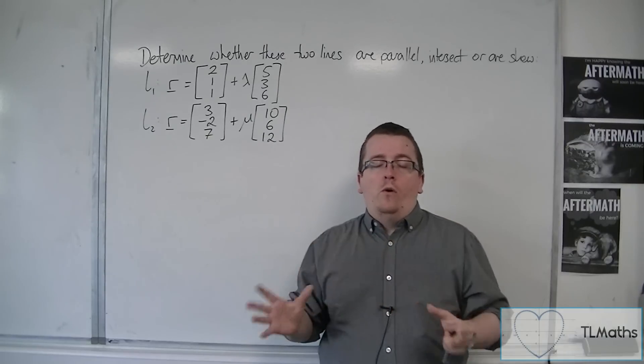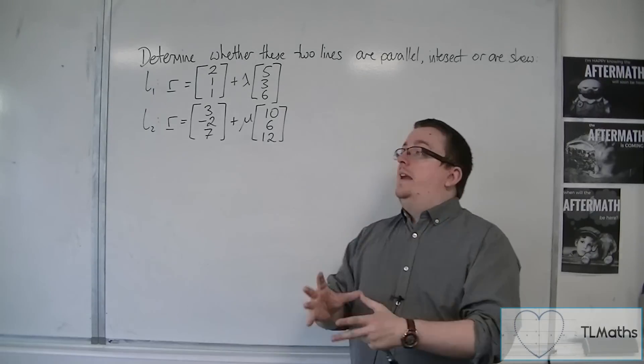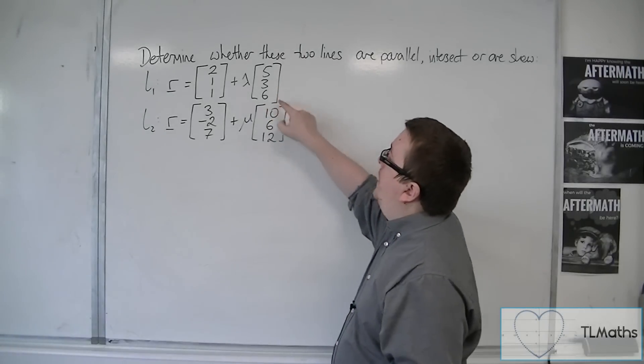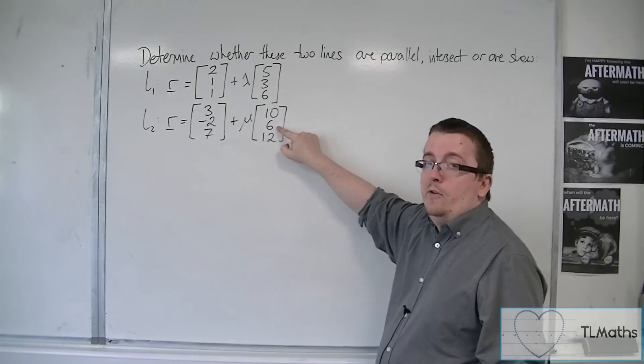It doesn't really matter where they are. All that matters is whether they are travelling in the same direction or not. So if the direction vectors are precisely the same, then they are definitely parallel lines.